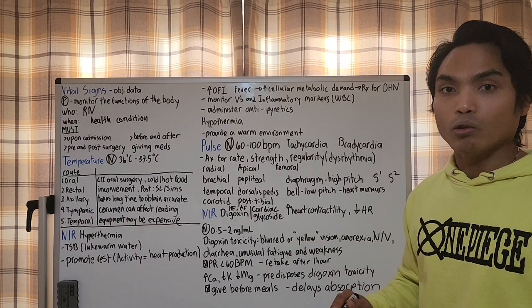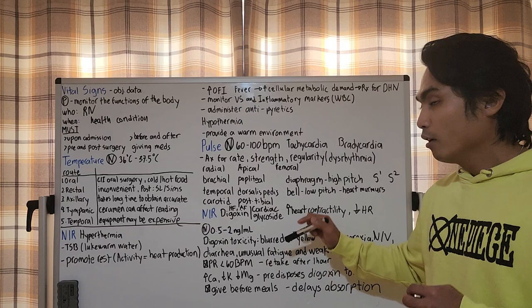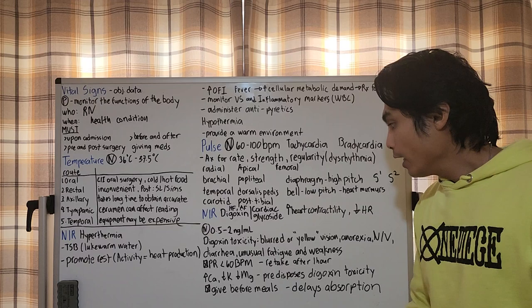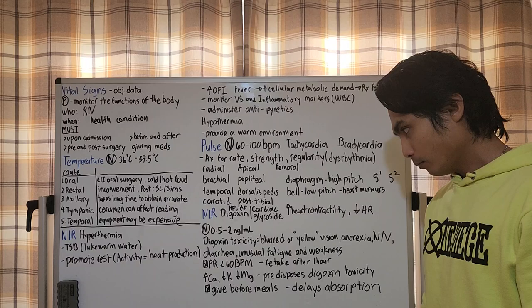If more than therapeutic level, that's digoxin toxicity. What happens in digoxin toxicity? Visual changes first - blurred or yellow vision, then GI symptoms which is anorexia, nausea, vomiting, diarrhea, followed by initial fatigue and weakness.